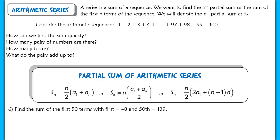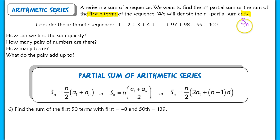A series is simply the sum of a sequence. When we want to find the nth partial sum — we call that the nth partial sum — all that really means is you're finding the sum of just the first n terms, whatever you define as n. You denote that partial sum as S_sub_n. S_sub_n just means the partial sum for a particular arithmetic sequence when you're using the first n terms.